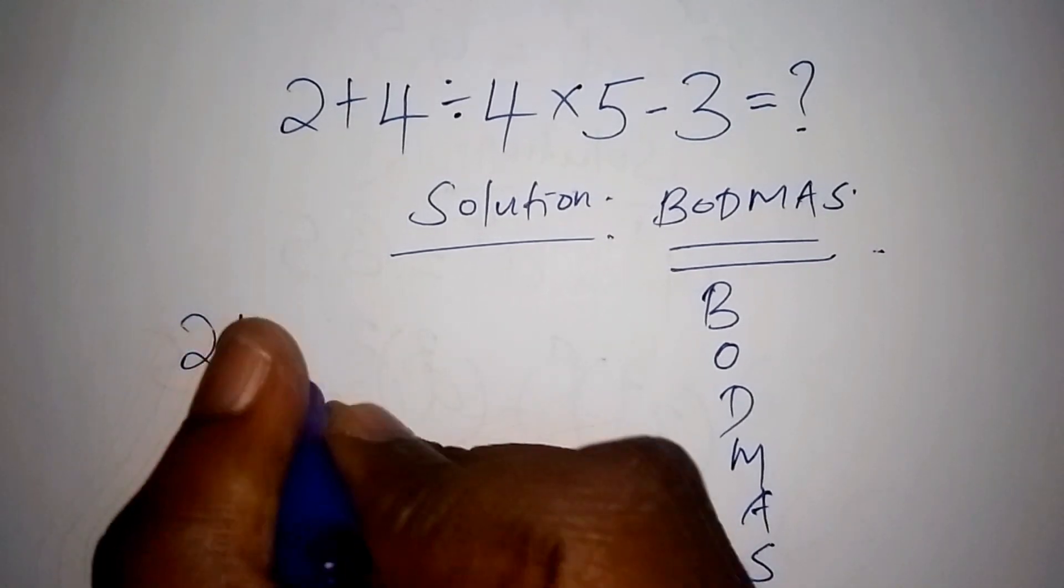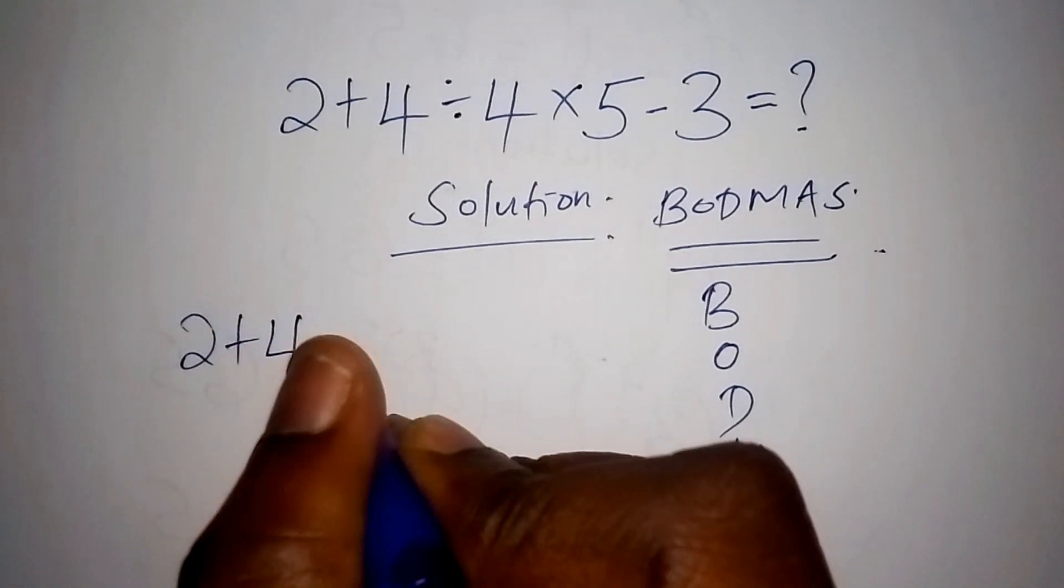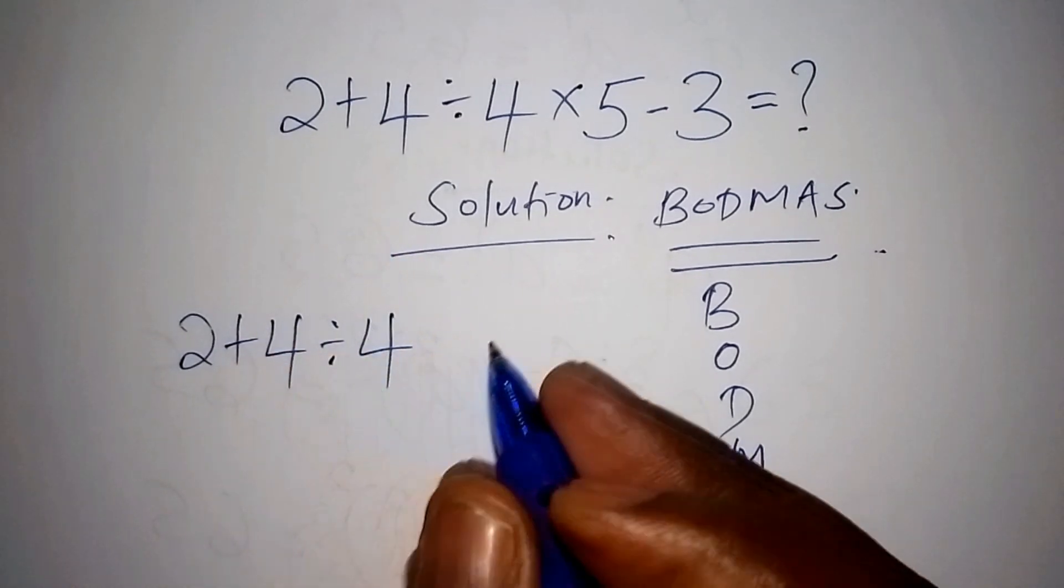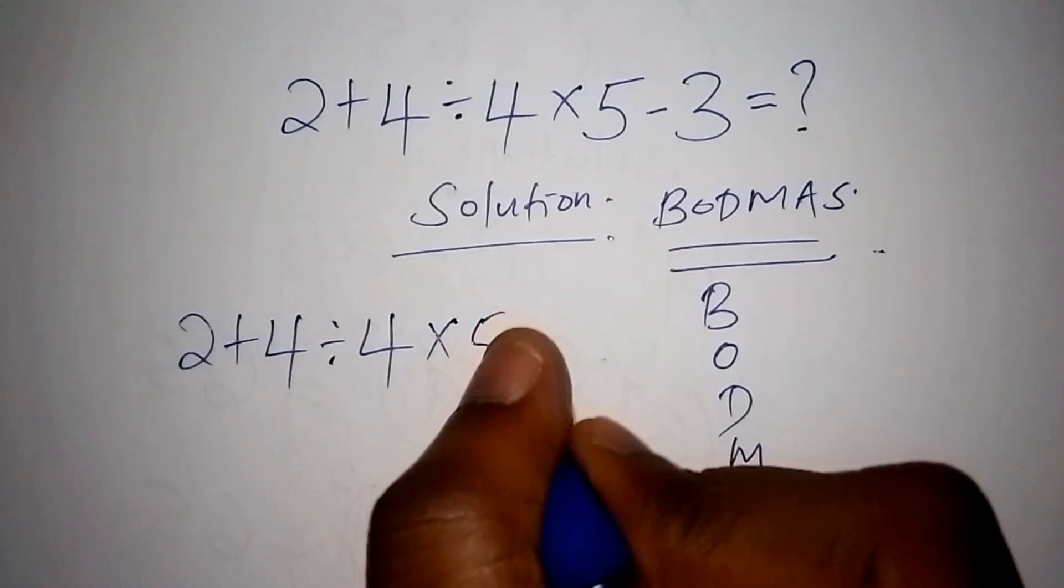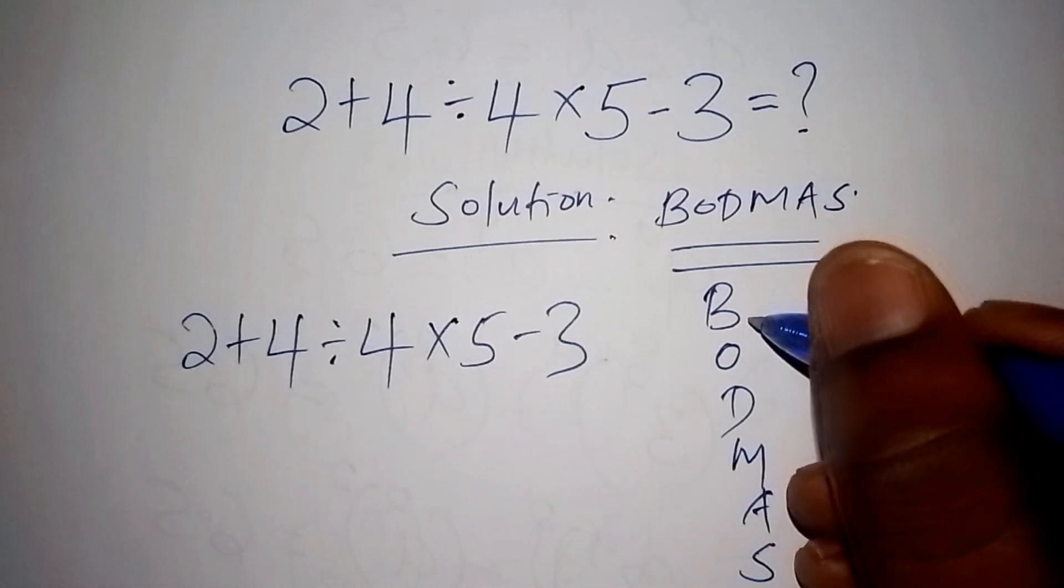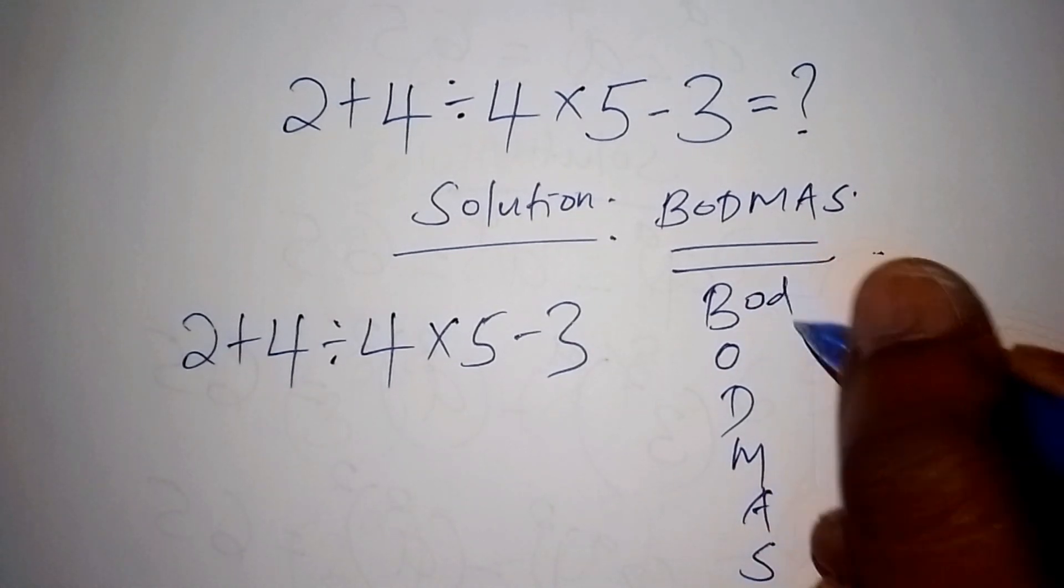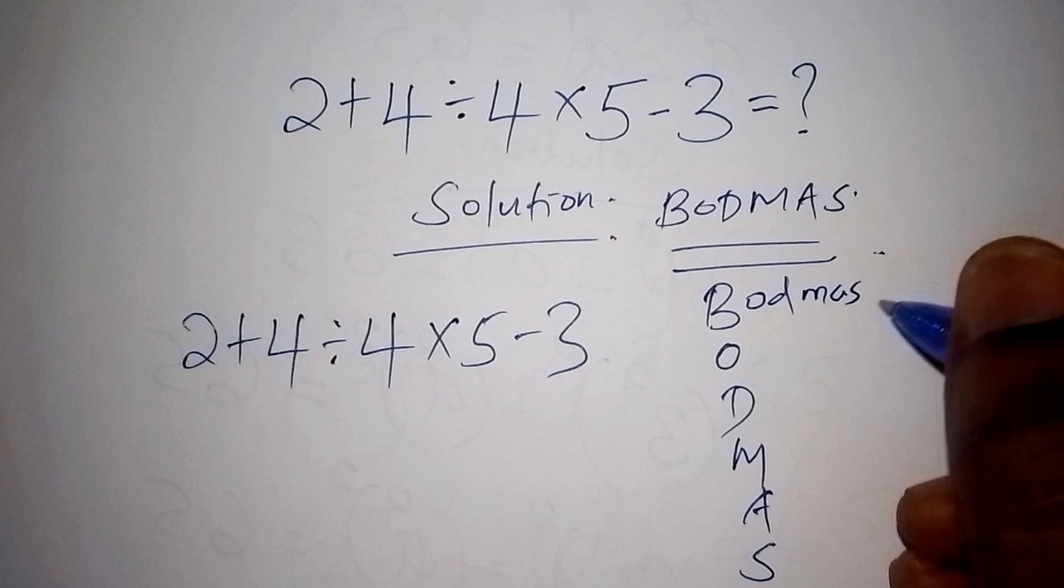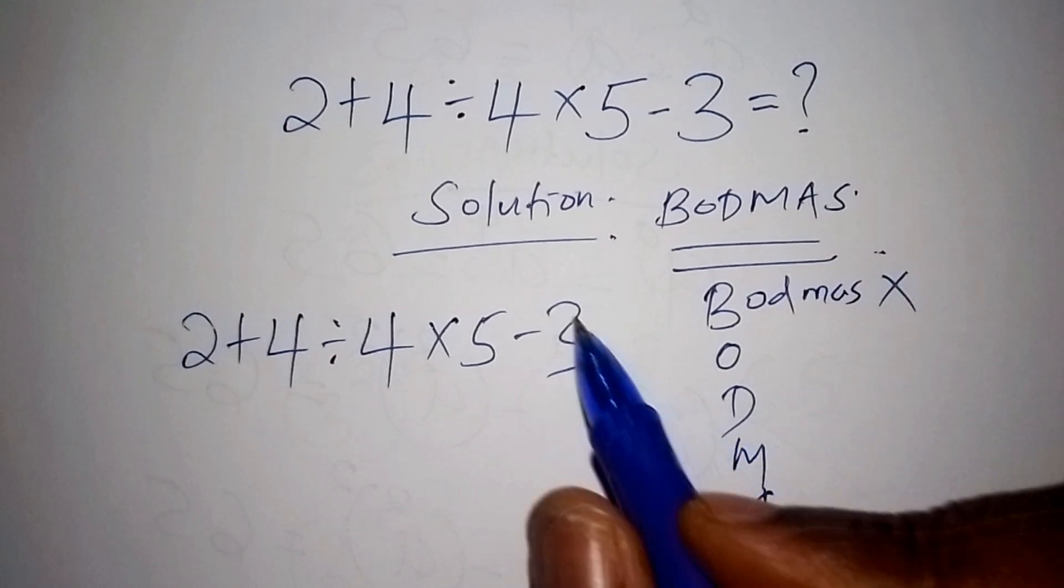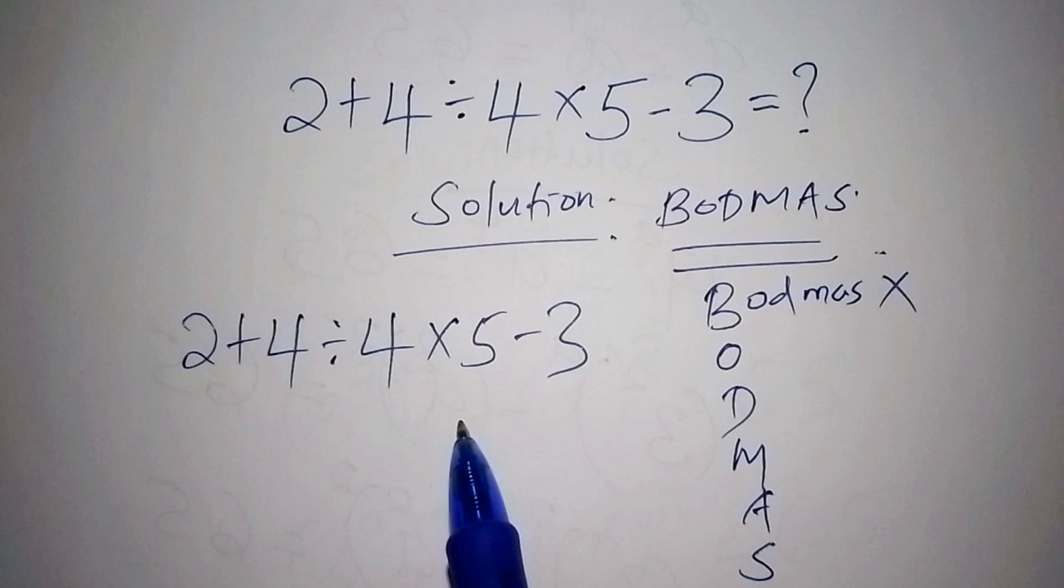So 2 plus 4 divided by 4 times 5 minus 3. So since we have B, B stands for the brackets. So we don't have the brackets, so we shall mark it as x because the brackets does not exist on this equation.